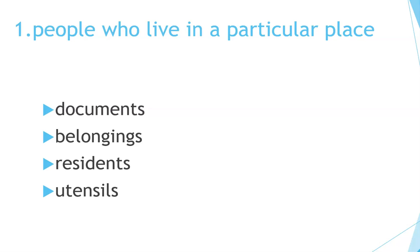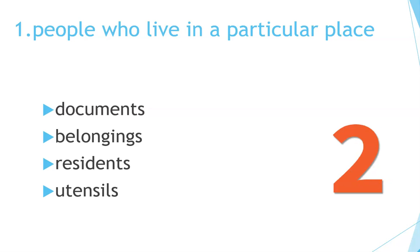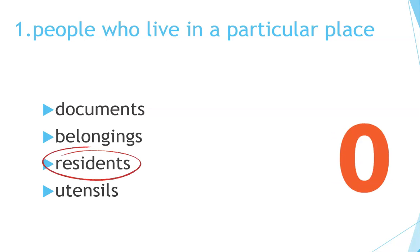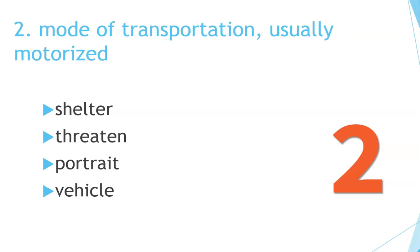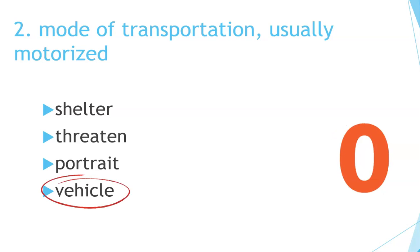Number 1. People who live in a particular place. Residents. Number 2. Mode of transportation, usually motorized. Vehicle.